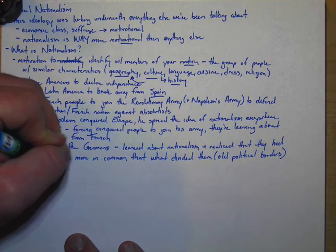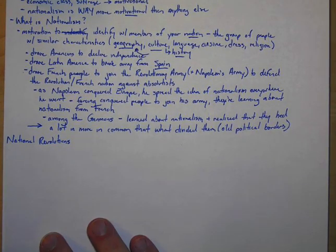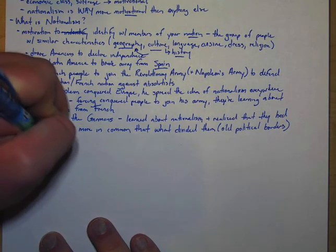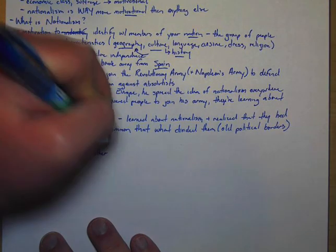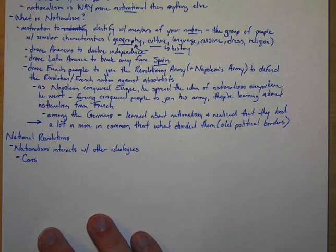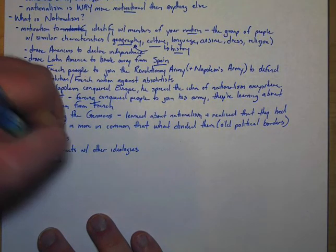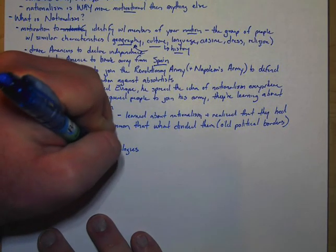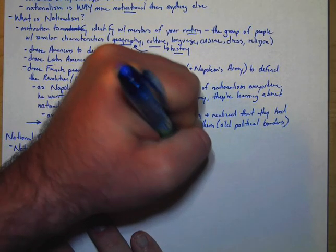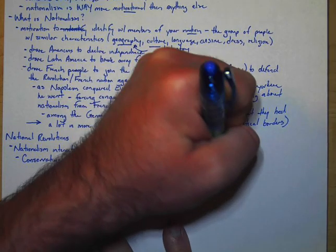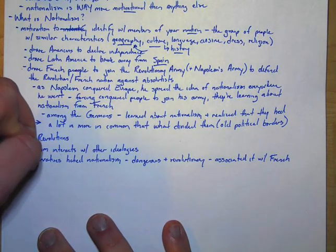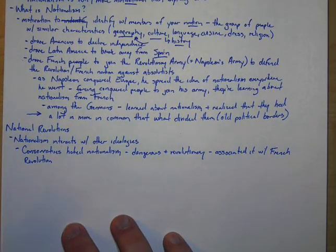Now, before we start talking about the revolutions, we have to see how nationalism interacts with other ideologies. Generally, conservatives hated nationalism. They saw it as dangerous and revolutionary because they associated it with the French Revolution.